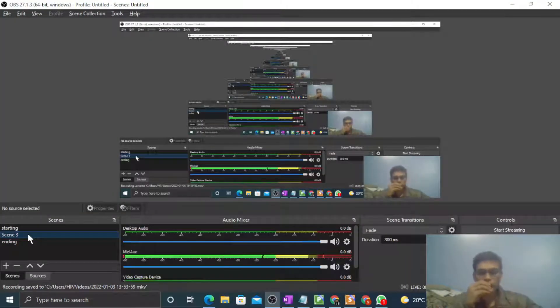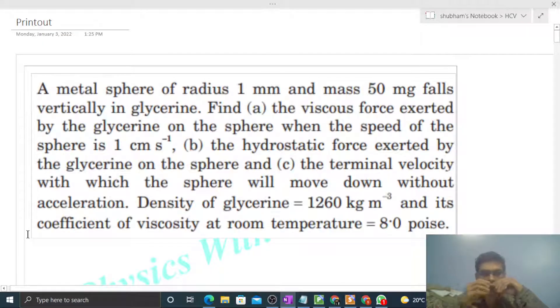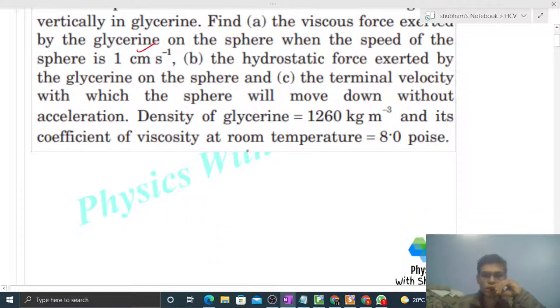Okay, hi everyone. Today let's discuss one interesting problem. A metal sphere of radius 1 mm and mass 50 milligram falls vertically in glycerin. Find the viscous force exerted by the glycerin on the sphere when the speed of the sphere is one centimeter per second.